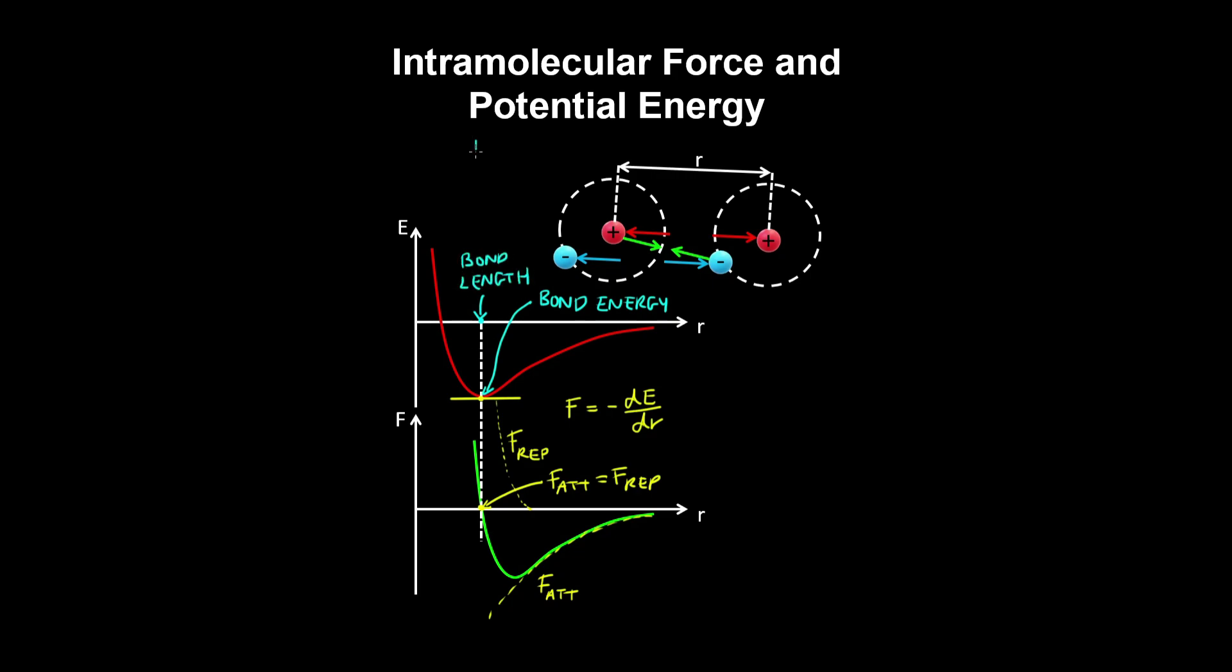So just to give you an idea of the bond between hydrogen atoms, the bond energy is 432 kilojoules per mole. And the bond length is 0.741 angstroms, or 74.1 picometers.